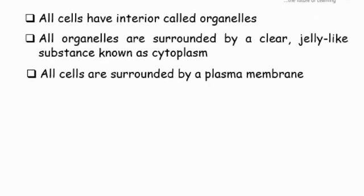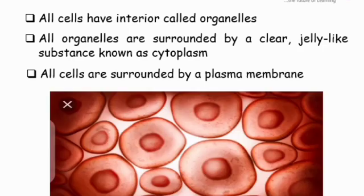Let's look at the characteristics of cell. Number one: all cells have interiors called organelles. Number two: all organelles are surrounded by a clear jelly-like substance known as cytoplasm. Number three: all cells are surrounded by a plasma membrane. This diagram shows cell under a microscopic view.